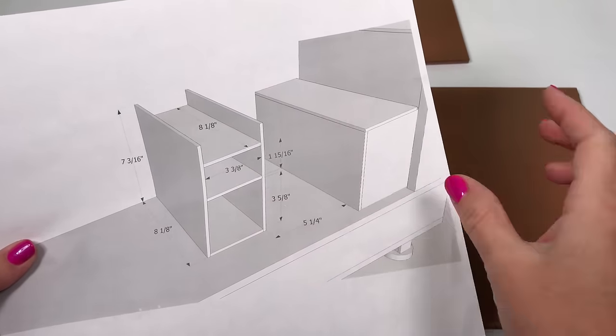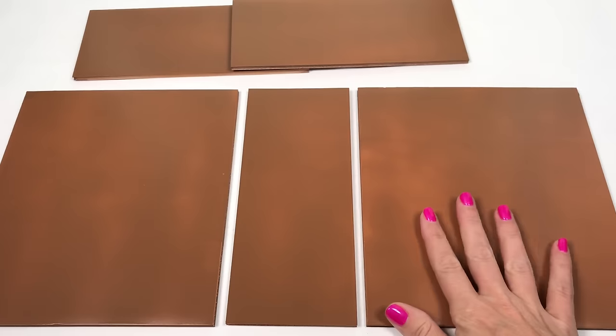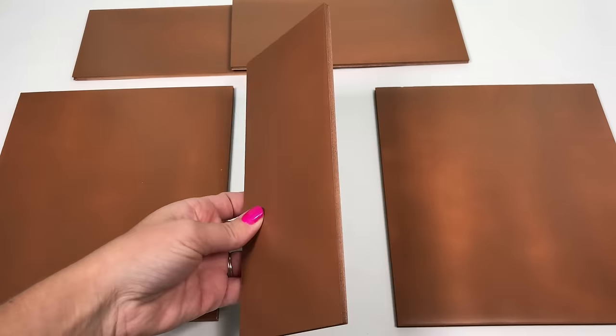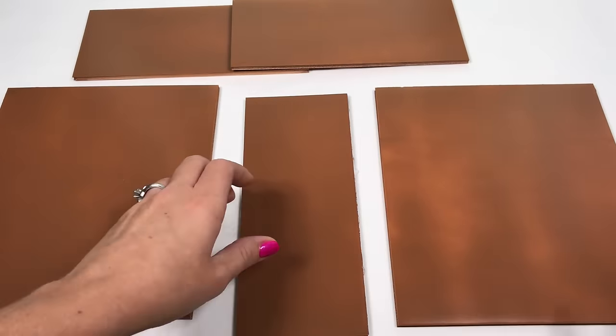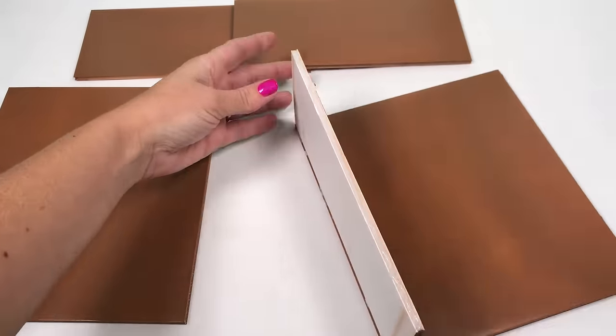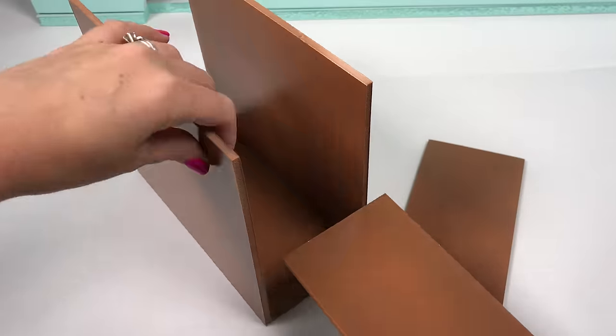Now we move on to the kitchen cabinets and these are also painted brown. Apply glue to the floor piece and then attach the side wall. Repeat for the second side wall and then slide in your shelves.